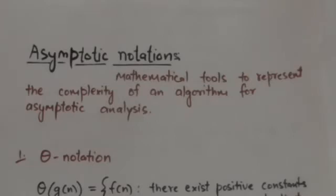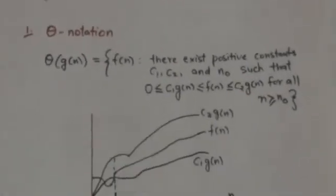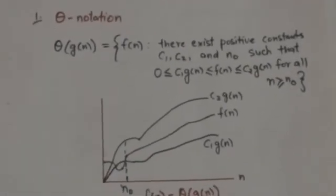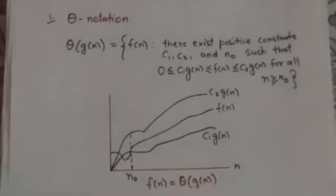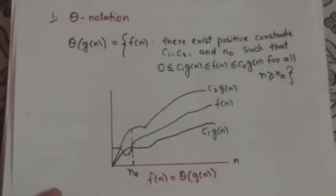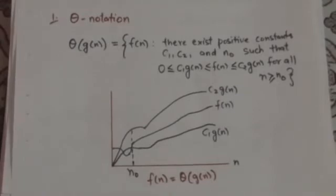The next topic is asymptotic notations. Asymptotic notations are mathematical tools used to represent the time complexity of an algorithm for asymptotic analysis. We will study three basic asymptotic notations: the first one is Theta notation.